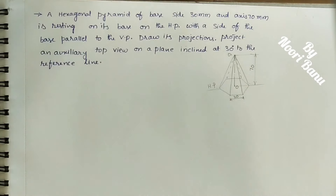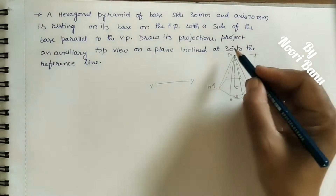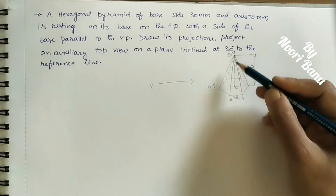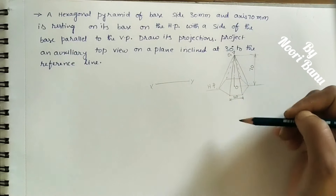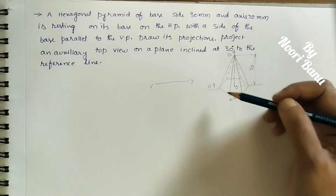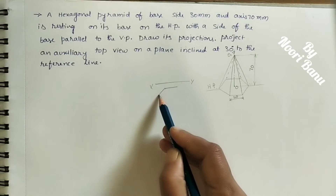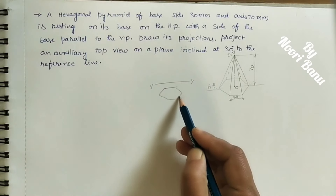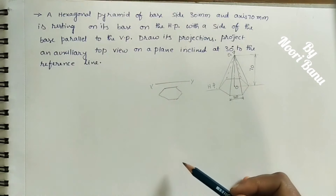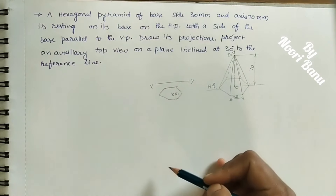Let us do the projections of this pyramid. First, we draw one reference line called the XY line. Below this XY line we do the top view. The top view means from the top we see this pyramid — we can see the hexagon base and all the slant edges meeting at the center. So below the XY line we will see the top view. Here this side is parallel to the vertical plane, and both apex and center are coming at the same place, marked as O comma O1.